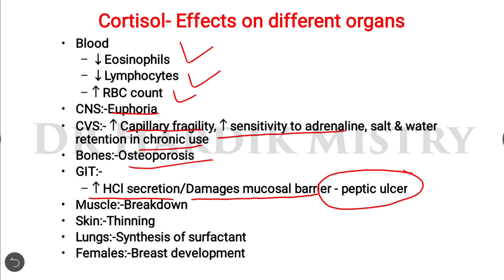In mental or physical stress, cortisol release increases HCl secretion, damages the mucosal barrier, and leads to peptic ulcer development in the GI tract. Cortisol also causes muscle breakdown, thinning of the skin, and can stimulate lung surfactant synthesis. In females, it can cause breast development.